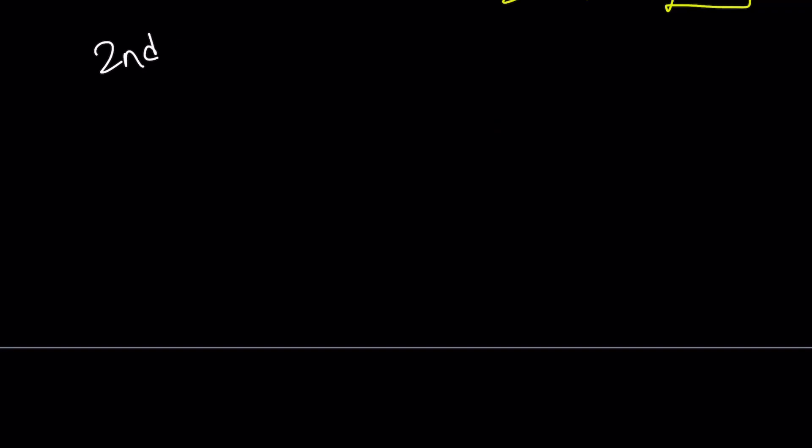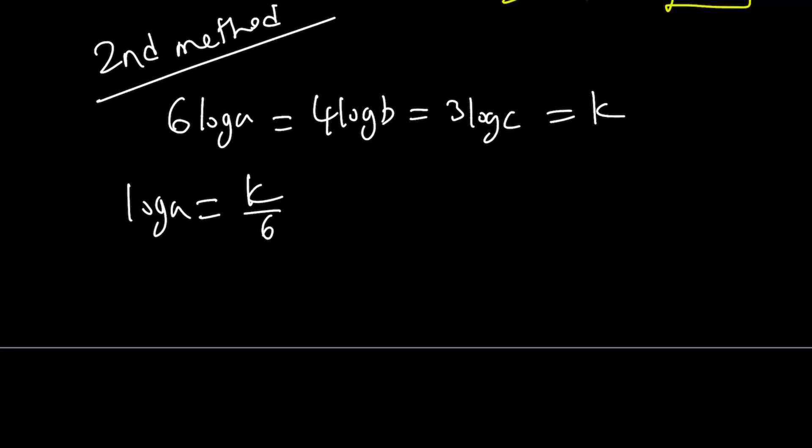Now, the second method, again, starts off with the same thing, same idea, but then we'll proceed differently. So 6 log A equals 4 log B equals 3 log C. And this time, let's go ahead and set them equal to K. From here, we get log A is equal to K over 6, log B is equal to K over 4, like before, and log C is equal to K over 3.